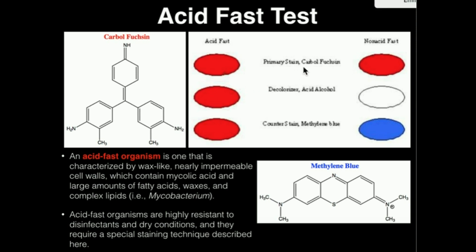The carbolfuchsin is able to intercalate into their cell walls, which to most things are nearly impermeable, and that carbolfuchsin stain stays in those cell walls very well, like such as in the cell walls of Mycobacterium and Nocardia.